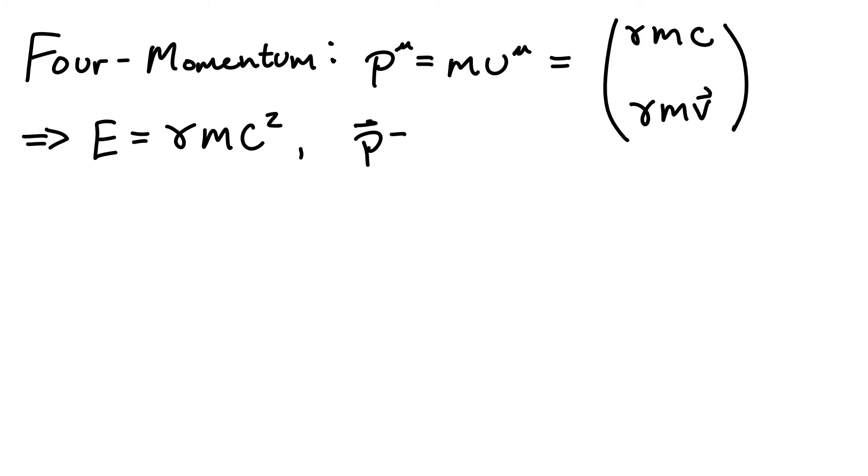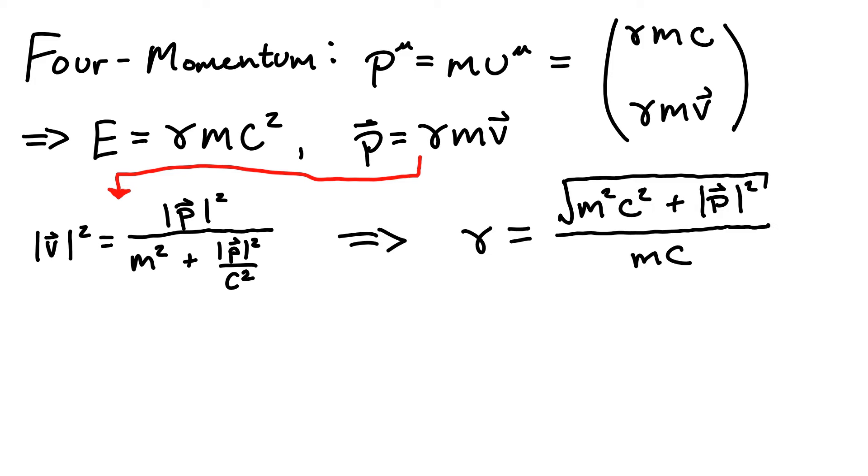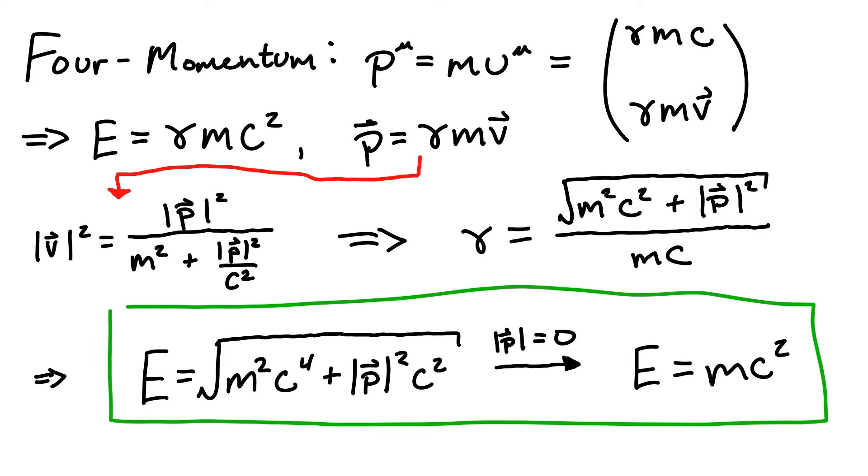So, we see that the energy of a particle in any frame is given by E equals gamma mc squared. This is fine, but often it's more useful to write this equation in terms of the spatial momentum, which we can find by solving the spatial part of the equality for the magnitude of the spatial velocity, which allows us to replace the gamma factor in terms of the 3-momentum and the mass. We can then plug this into what we found before for the zero component of the 4-momentum, and we find this expression for the energy. Of course, in the rest frame of the particle where its 3-momentum vanishes, this reduces to the famous equation E equals mc squared.